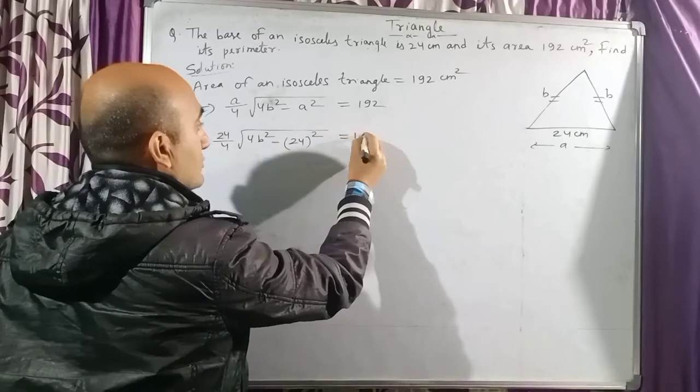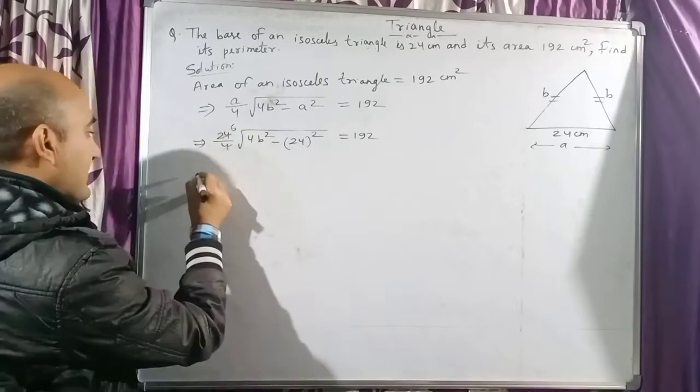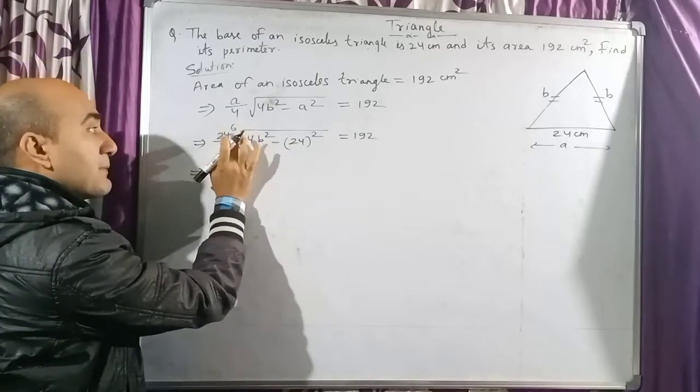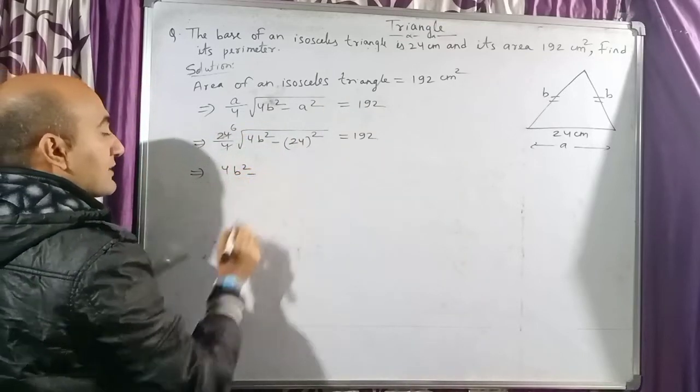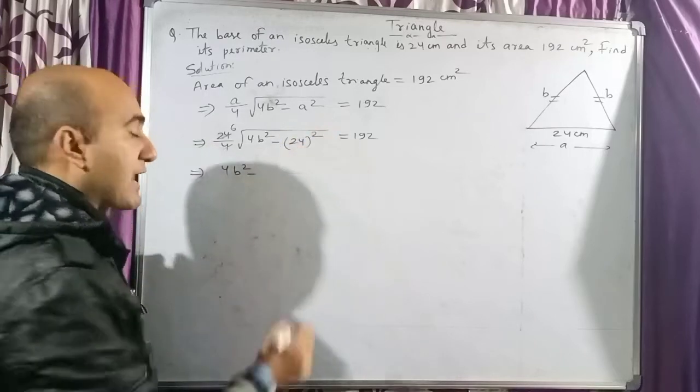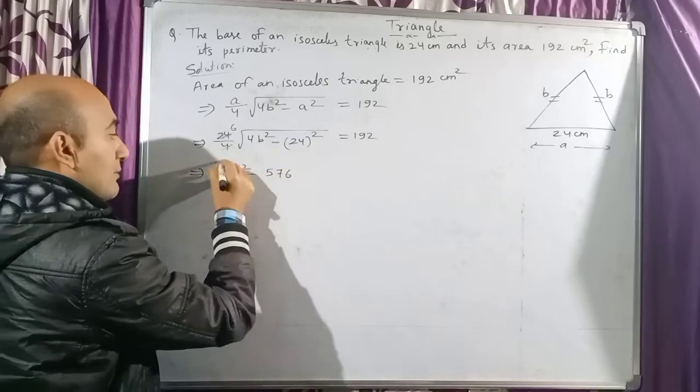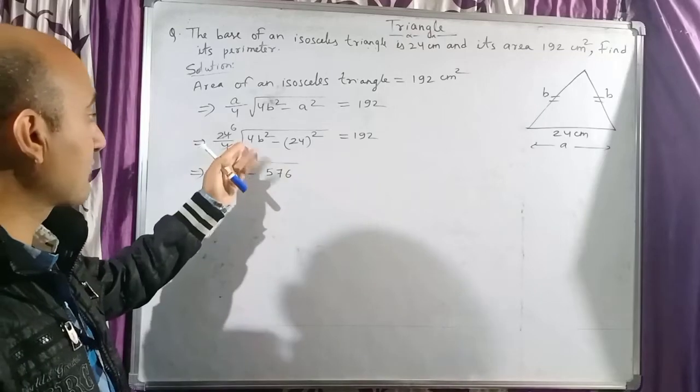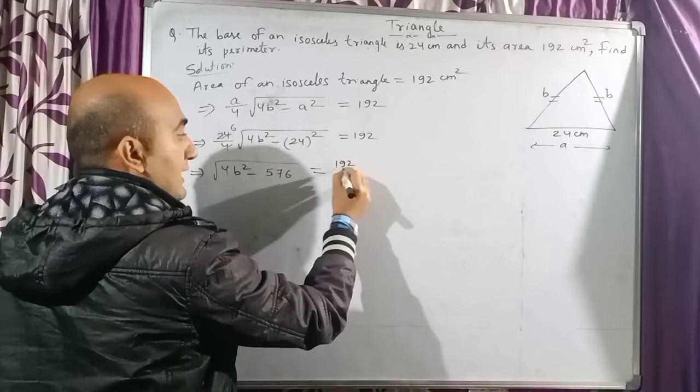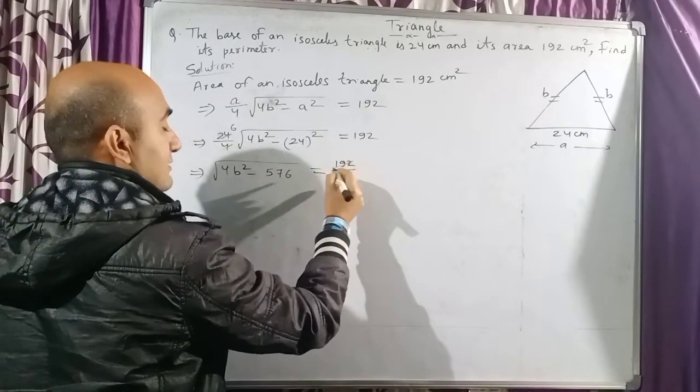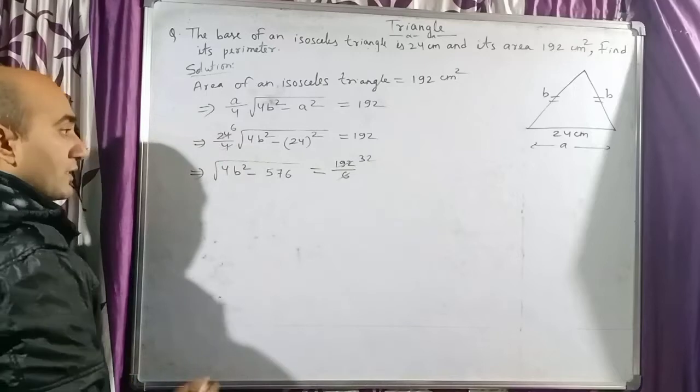So you can write: 24/4 × √(4b² - 24²) = 192. So 24 by 4 you can cancel, and this 6 is in multiplication form here and can go and divide there. So you can write: √(4b² - 576) = 192/6. You can do it in rough work: 24 into 24 equals 576. Don't forget we have root over here. And this 6 will come and divide here: 192 by 6 equals 32.